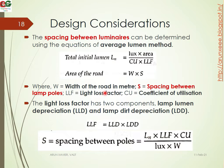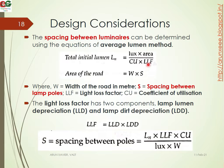For design considerations, the first parameter is the spacing between two luminaires. The spacing between luminaires can be determined using the average luminance method: total lumens equals lux times area divided by CU times LLF. The area equals W times S, where W is the width of the road and S is the spacing between the two lamp poles. Rearranging, S equals LN times LLF times CU divided by LX times W.